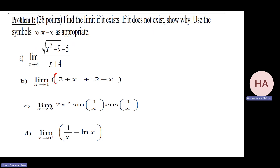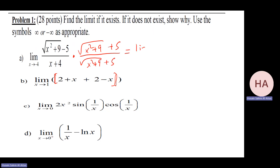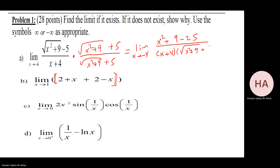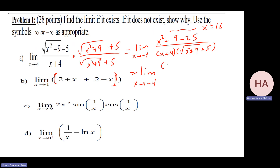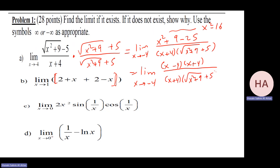Greatest integer: rationalizing gives x squared plus nine minus twenty-five over x plus four, which simplifies to x squared minus sixteen over x plus four, or x minus four times x plus four over x plus four times the square root of x squared plus nine plus five. After cancellation, substituting x equals minus four gives minus eight over square root of sixteen plus nine plus five, which is minus eight over five plus five. The answer is minus four over five.